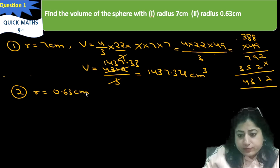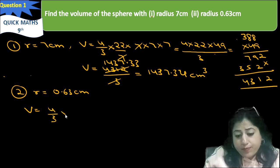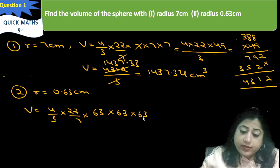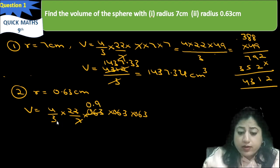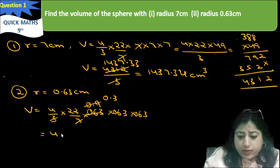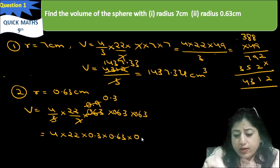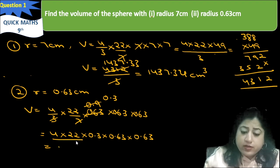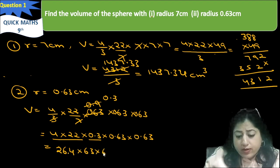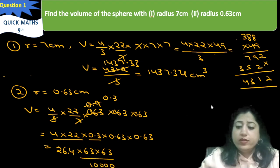For the second case, the radius is 0.63 centimeters. So the volume will be 4 by 3 into pi into r cube, where pi is 22 by 7. R cube means 0.63 into 0.63 into 0.63. Simplifying, we get 4 into 22 into 0.3 into 0.63 into 0.63, which is 88 multiplied by these decimal values.